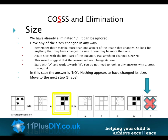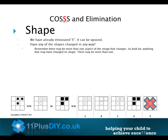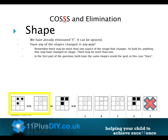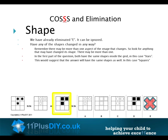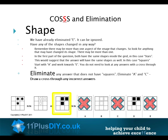Move to the next step: Shape. We have already eliminated E — it can be ignored. Have any of the shapes changed in any way? In the first part of the question, both have the same shapes inside the grid — in this case, stars. This would suggest that the answer will have the same shapes as well — in this case, squares. Working from A towards E, eliminate any answer that does not have squares. Eliminate A and C.